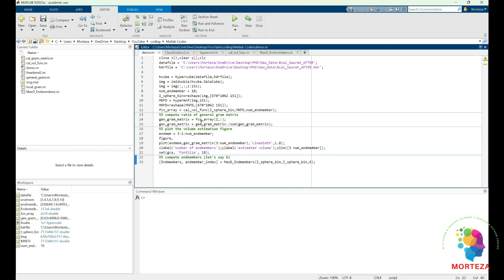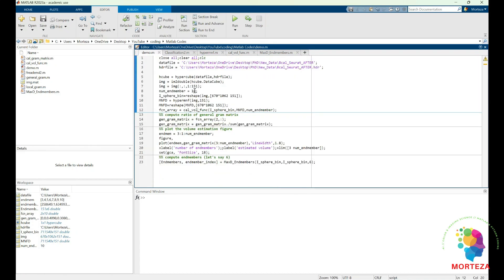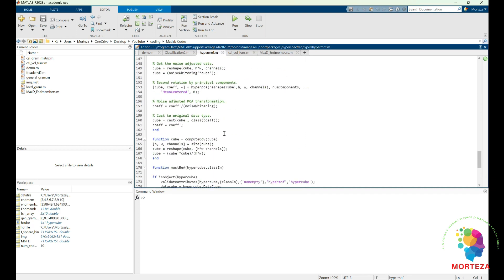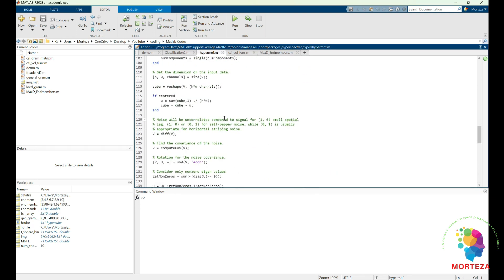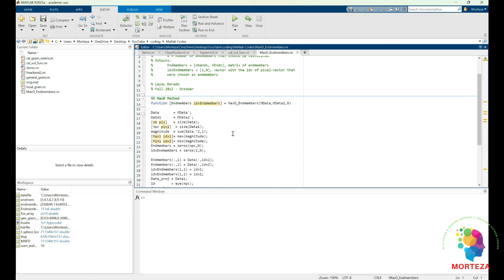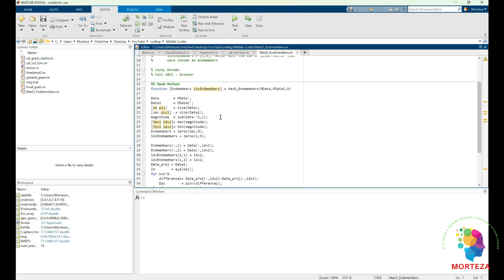But before that, it's worth talking about this function. This is the function that calculates the endmembers, and you could access the code for this problem using a link in the description section of the video. So there are two functions: hyperMNF, which is here, and we don't need to go through it. I'm going to include the code in the description section, as I said. And this is the function that calculates the endmembers using maximum distance. Again, I'm going to include this in the description section as well.